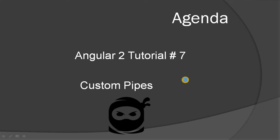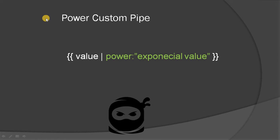We are going to create the power pipe. It takes an exponential value as an argument and returns that power of the value. Everything in TypeScript is a class, so we have to create the class and decorate it with the pipe decorator.